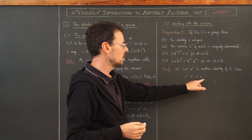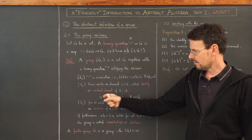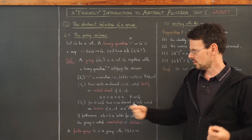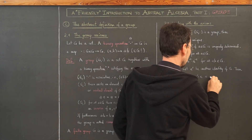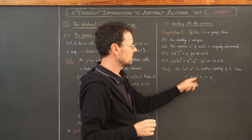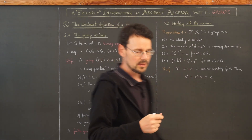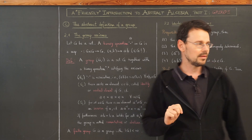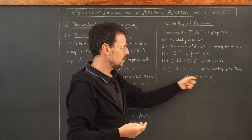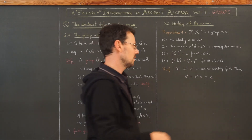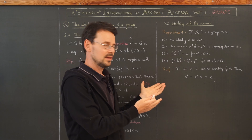Why? Because e is the identity, and the identity changes nothing when we compose with it. But e' is also assumed to be an identity, so composing on the left with e' also changes nothing — so we end up with e. This proves that e' = e.